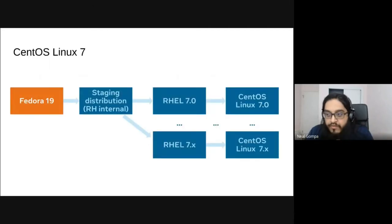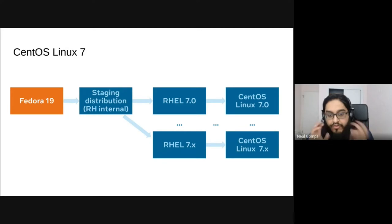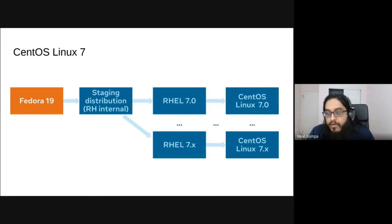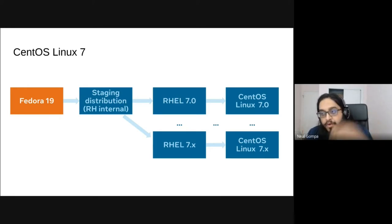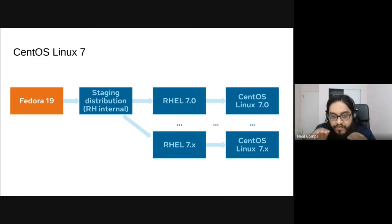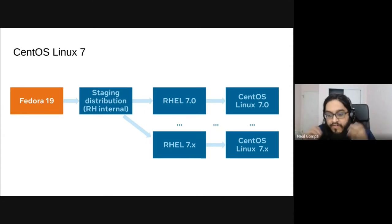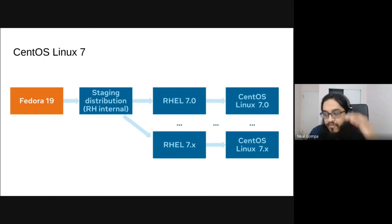Let's do a quick recap of how things have worked in the past. With CentOS Linux 7, it started its life as Fedora Linux 19. Fedora Linux 19 gets branched into a staging distribution — some people would call it rel-rawhide or rel-devel. This is where they start doing the work to cut down the content of Fedora Linux to something that Red Hat wants to support, pulling in things from the future like cherry picks from Fedora Linux 20 and 21. That eventually feeds into becoming Red Hat Enterprise Linux 7.0, which is then rebuilt as CentOS Linux 7.0, maintained and branched forward for every successive point release — 7.1, 7.2, 7.3, and so on.